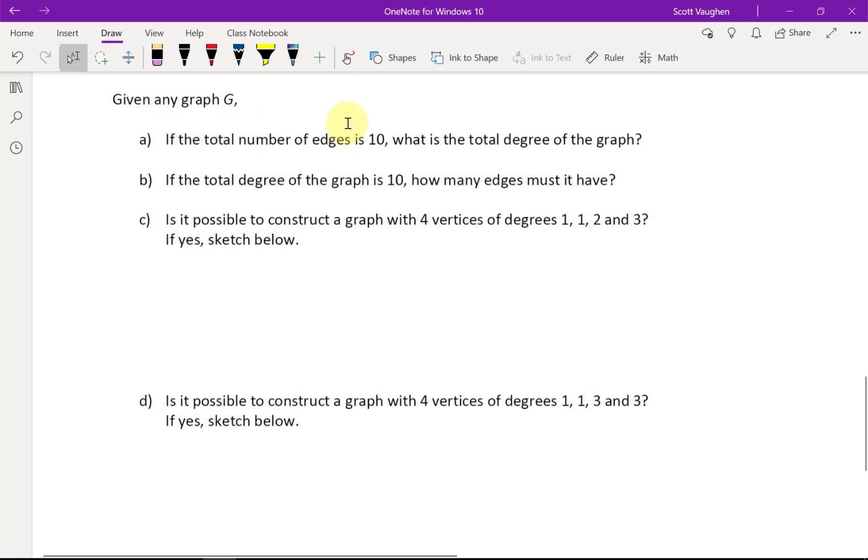All right. Let's look at this example here. Given any graph G, the total number of edges is 10. What's the total degree of the graph? We could always say that it's 2 times the number of edges to get the total degree. So, 2 times 10. This would be 20. If the total degree of the graph is 10, then how many edges would it be? Well, it would be half of that. It would be 5 because you know that 5 times 2, that would give you 10 for the total degree.